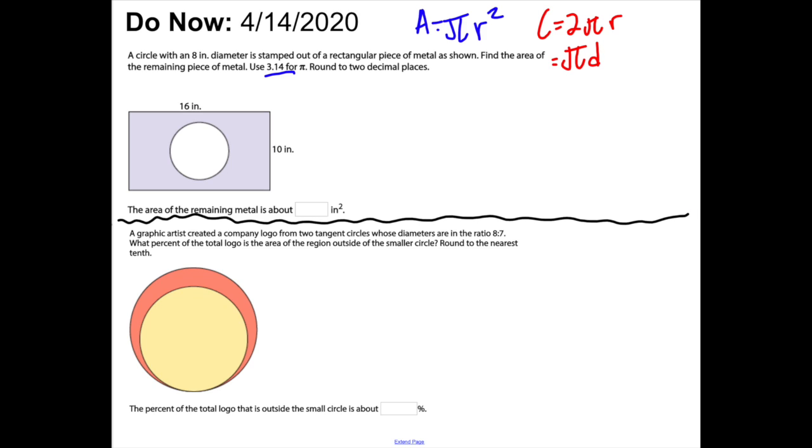If we take a look at the first problem, from trig what I've been emphasizing is having a good problem-solving process. First, we identify the important information. We have an 8-inch diameter, which goes through the center and the total is 8 inches. I want to know the remaining piece of metal.